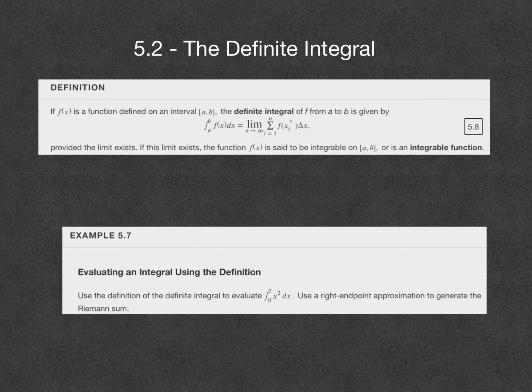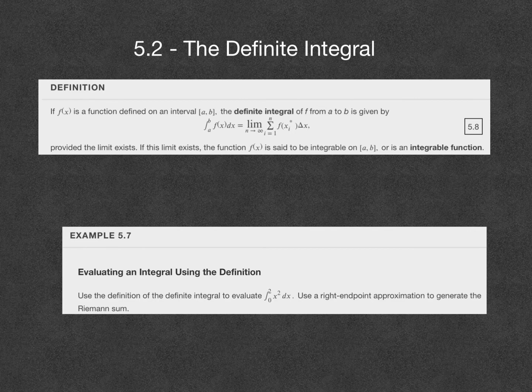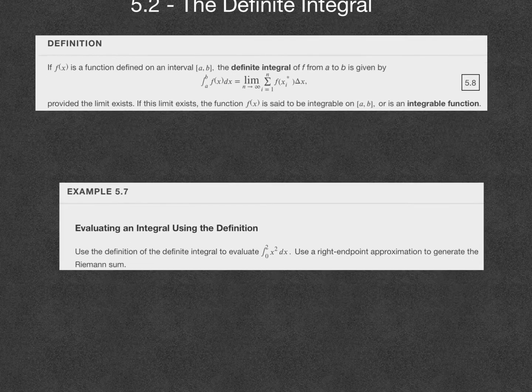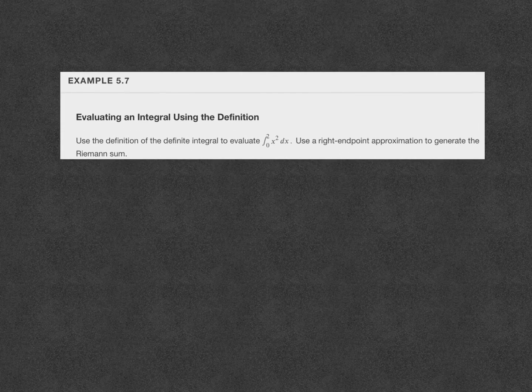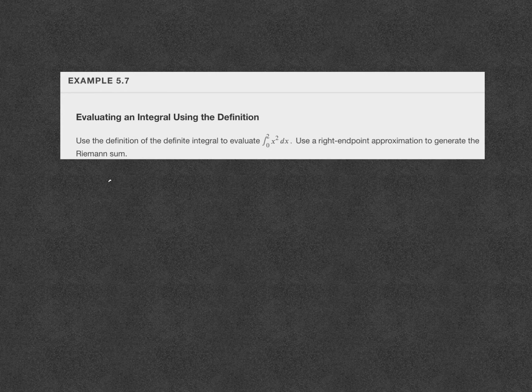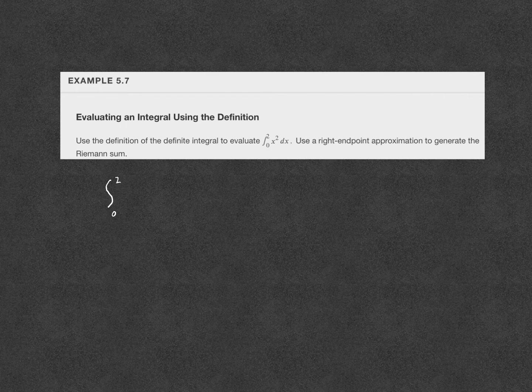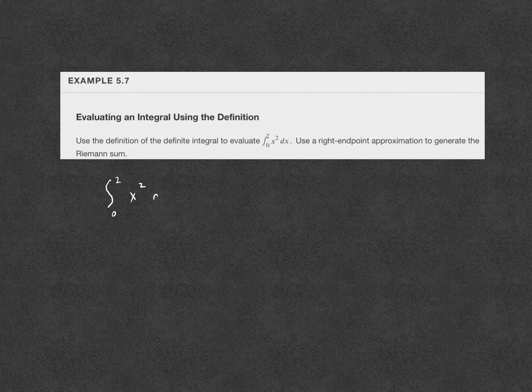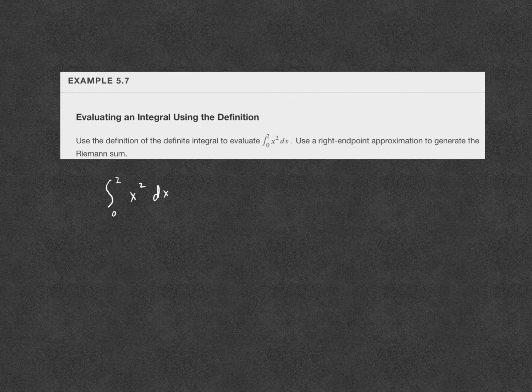Let's look at an example evaluating an integral using our definition. Here we have the integral from 0 to 2 - that's how you read it - the integral from 0 to 2 of x squared dx. For this example, we're using the right endpoint approximation to generate the Riemann sum.